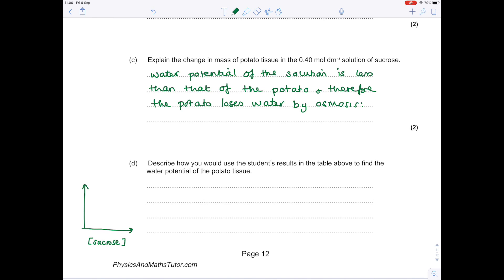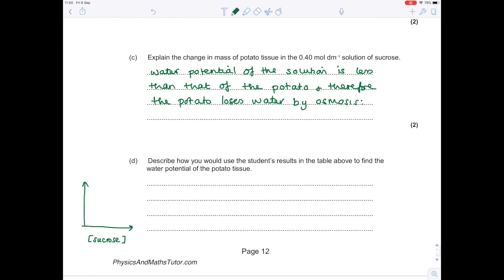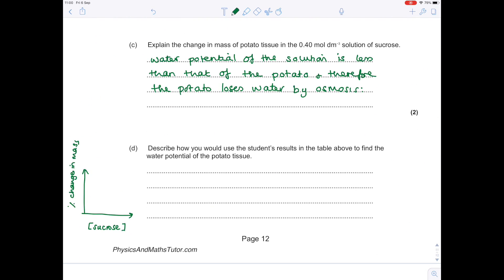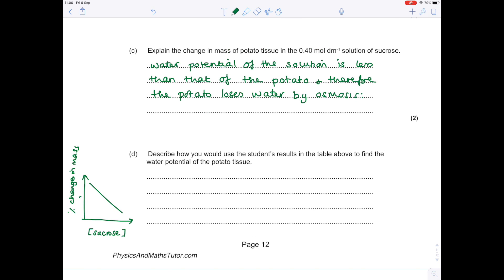You'll have a graph that's shaped a little bit like this, and because the percentage change in mass can either be positive or negative, effectively you can draw—once you've plotted all your points—you can draw a pencil line horizontal at zero.